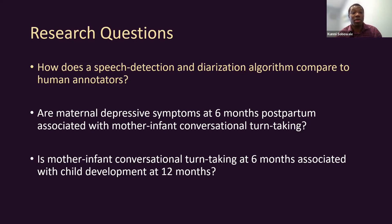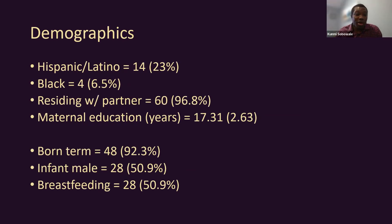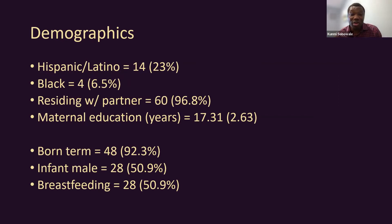Now the two main questions: are depressive symptoms associated with conversational turn-taking at six months? And is conversational turn-taking associated with child development at 12 months? This is our sample: pretty ethnically diverse, not as much racially. Most folks lived with their partner. Moms were well-educated. Most infants were born term, about 50/50 in terms of infant sex.